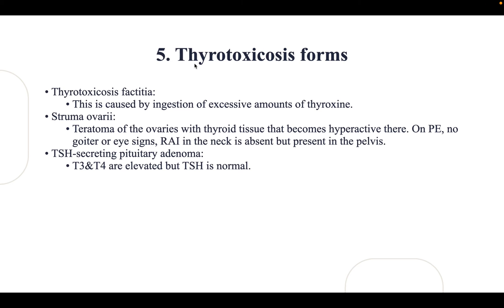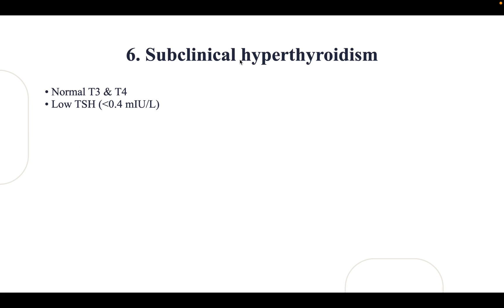Thyrotoxicosis factitia is caused by ingestion of excessive amounts of thyroxine, often believed to aid weight reduction. Struma ovarii is a teratoma of the ovaries containing thyroid tissue that becomes hyperactive; on examination there is no goiter or eye signs, and radioiodine uptake is absent in the neck but present in the pelvis. A TSH-secreting pituitary adenoma shows elevated T3 and T4 with normal or high TSH — this is secondary hyperthyroidism. Subclinical hyperthyroidism shows normal T3 and T4 with low TSH.